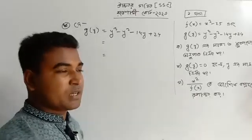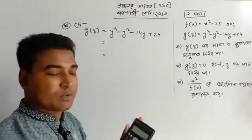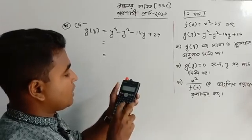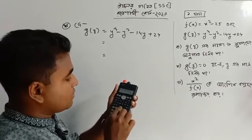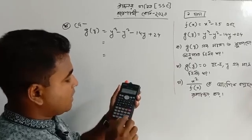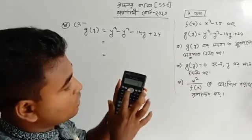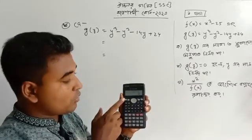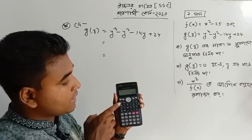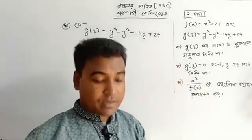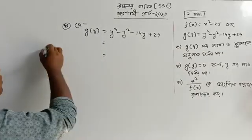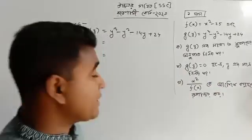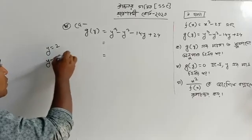We have y cube minus y square minus 14y plus 24. So I am doing the calculation — y cube minus y square minus 14y plus 24. What was the factor? What was the one? What was the two?